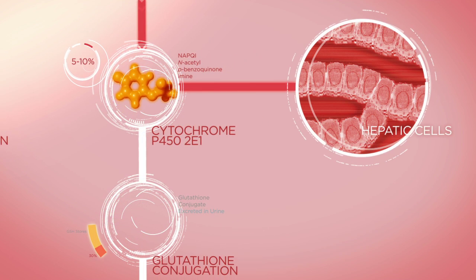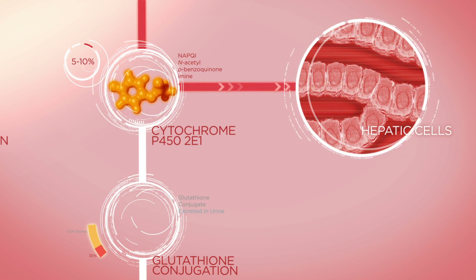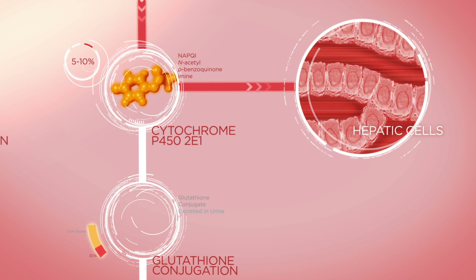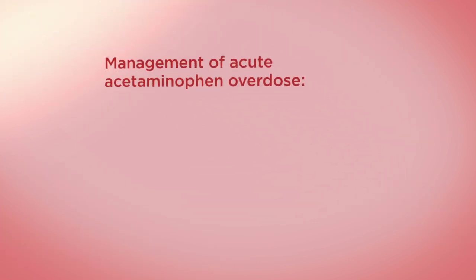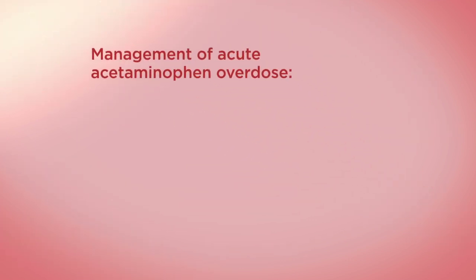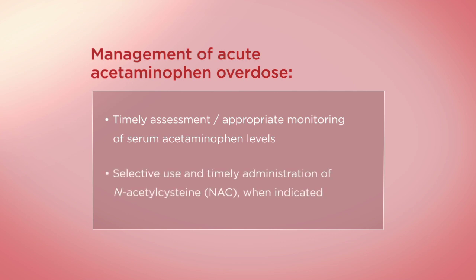It is estimated that when the amount of glutathione is reduced to about 30 percent of normal, unconjugated NAPQI may bind to hepatic cell macromolecules, leading to hepatic injury. Acute acetaminophen overdose can often be managed effectively. Timely assessment and appropriate monitoring of serum acetaminophen levels, as well as selective use and timely administration of the antidote N-acetylcysteine, can be effective in preventing overdose-related hepatic injury.